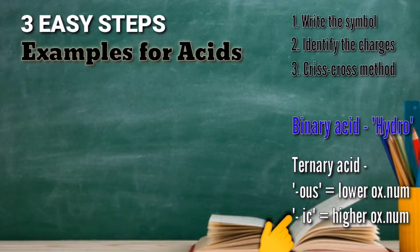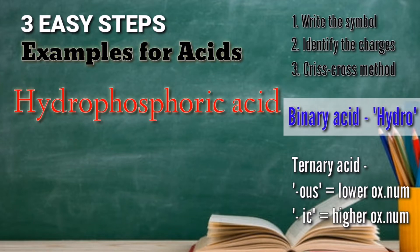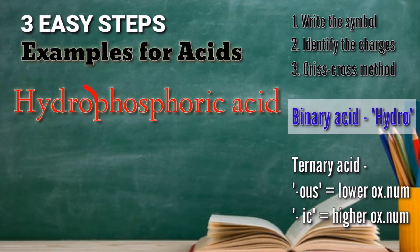Let's have an example for binary acidic compound. We have hydrophosphoric acid. As you can see, we have the word 'hydro', which means it is a binary acid. In other words, it has only two elements in the compound.